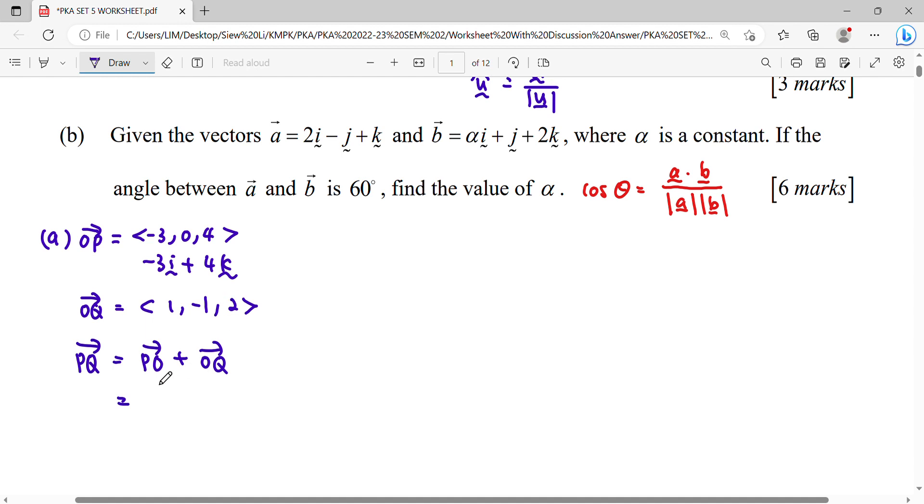PO and OP, you can see it is in opposite direction. So we're going to put negative plus OQ, 1, negative 1, 2. X plus with X, Y plus with Y, and Z plus with Z.